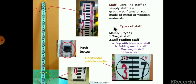Staff is categorized into two types: one is target staff and another is self-reading staff. Self-reading staff is also divided into four categories. In this picture, this is the top portion of the staff and this is the bottom portion. On the backside of this staff there is a push button.